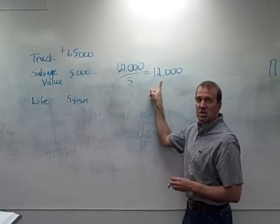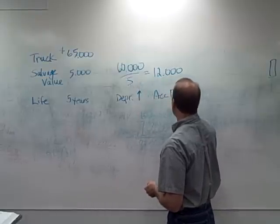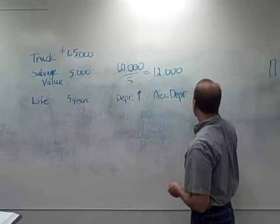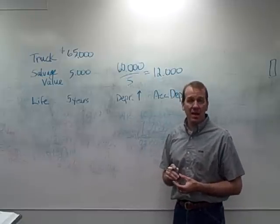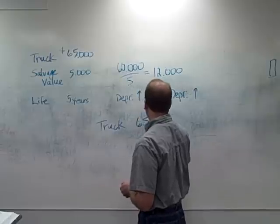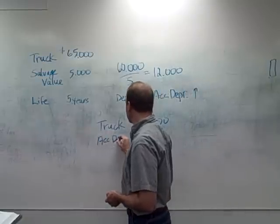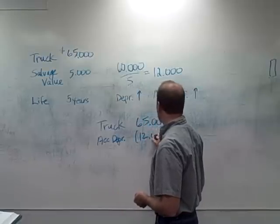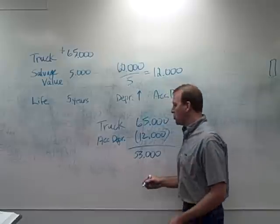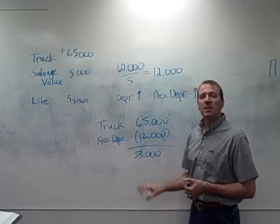So we have $12,000 of depreciation expense, which increases on our income statement. Then we have another account called accumulated depreciation — I'll abbreviate it here. That account also increases, but it's a contra asset account, kind of like our allowance. At the end of the first year, our truck stays on our books at $65,000 the whole life.